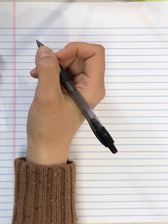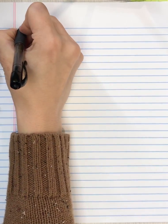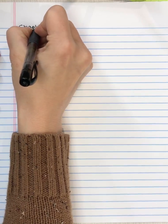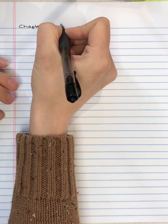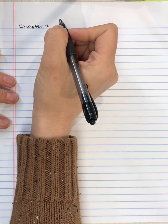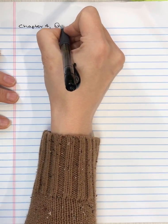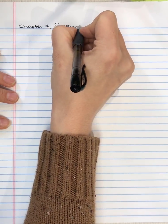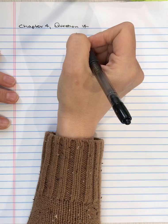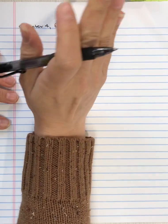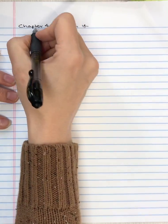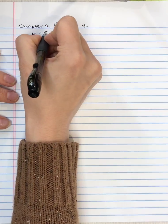Now I will do Chapter 4, Question 14. This question says a population has a mean of 50.